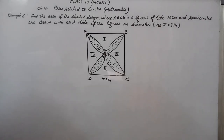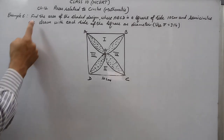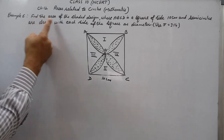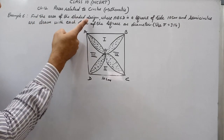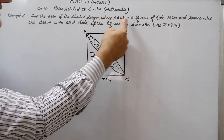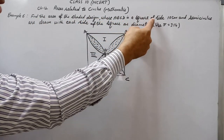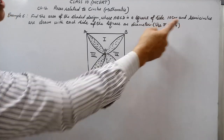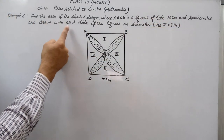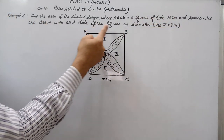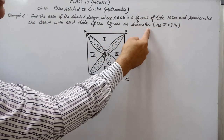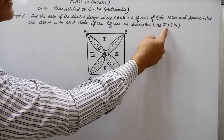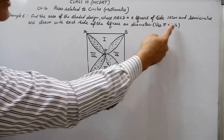Friends, welcome to my YouTube channel. Let's solve this question. Find the area of the shaded design where ABCD is a square of side 10 centimeters and semicircles are drawn with each side of the square as diameter. Use π = 3.14.